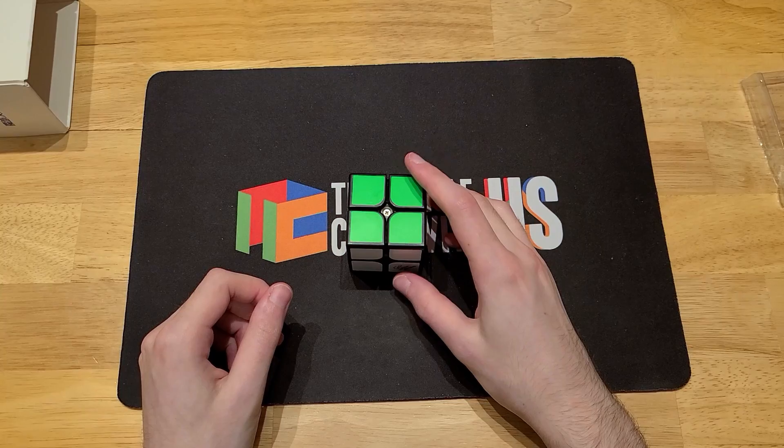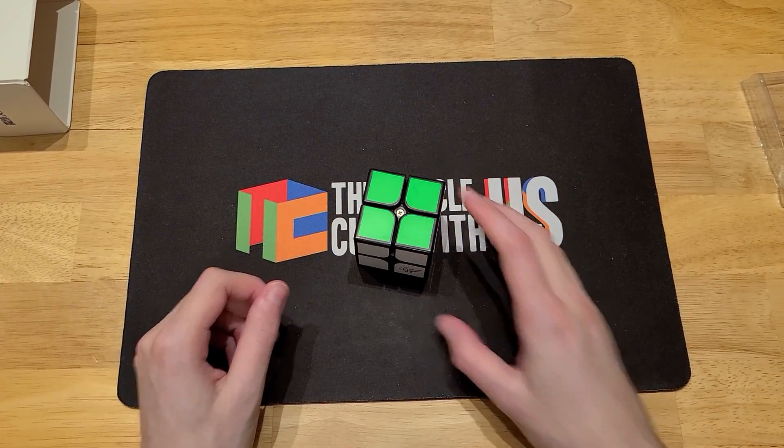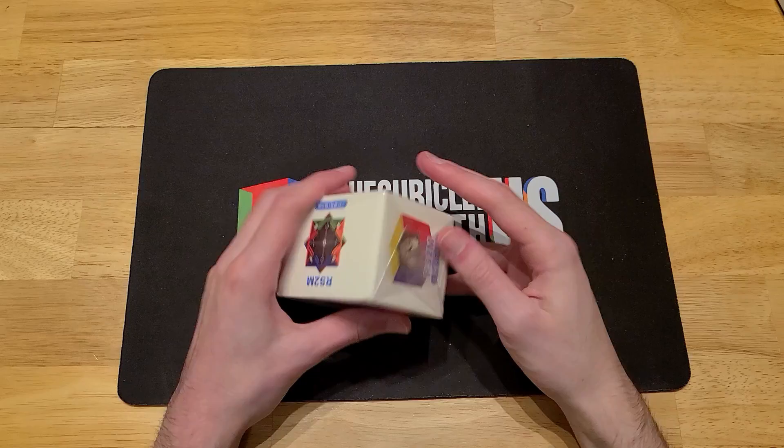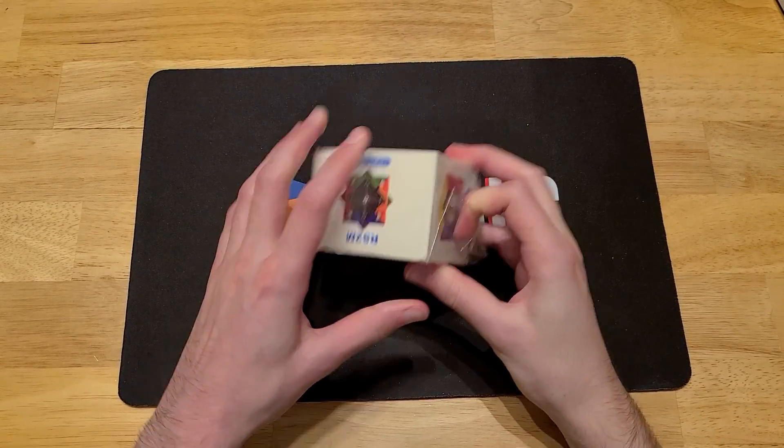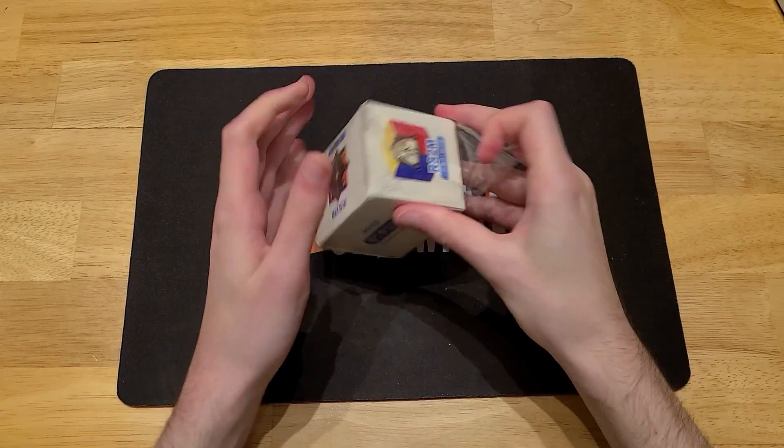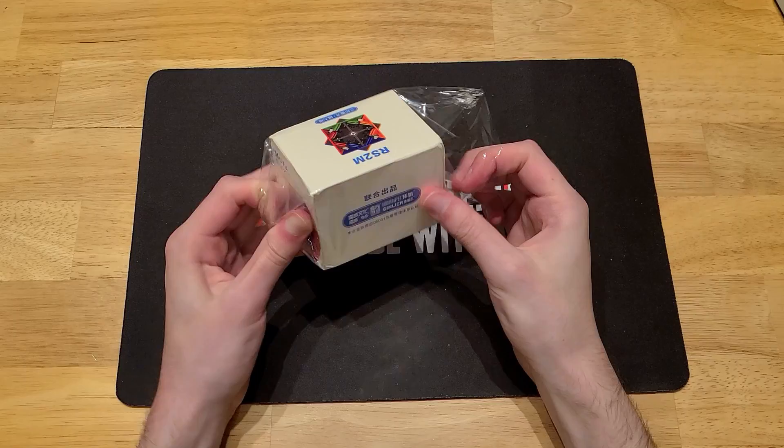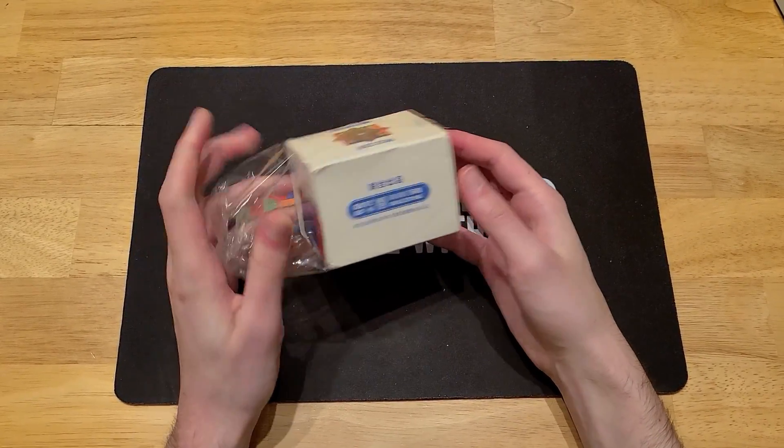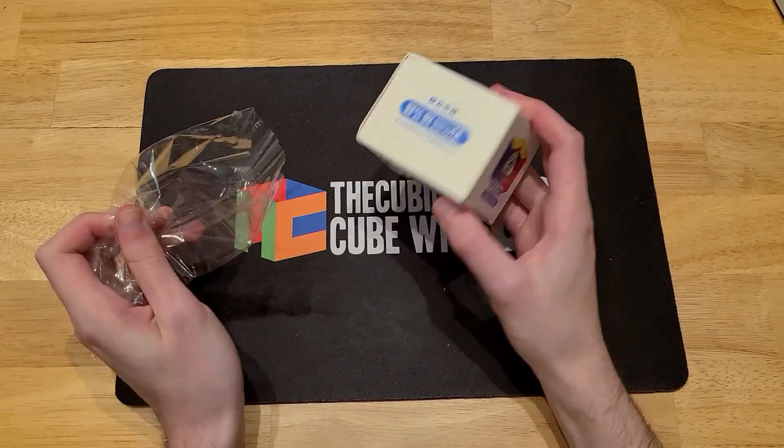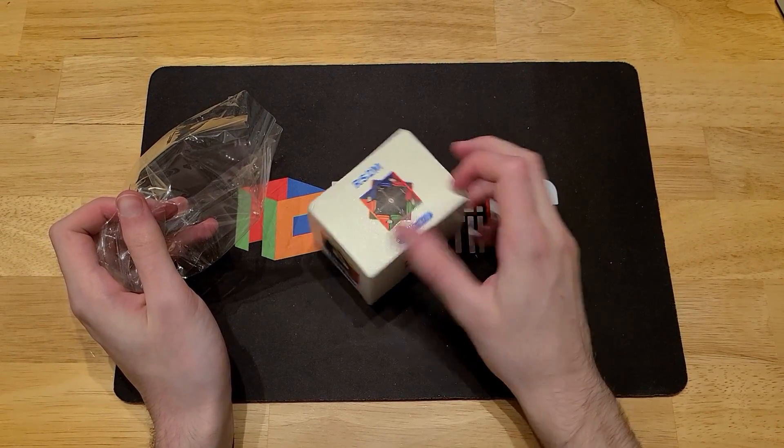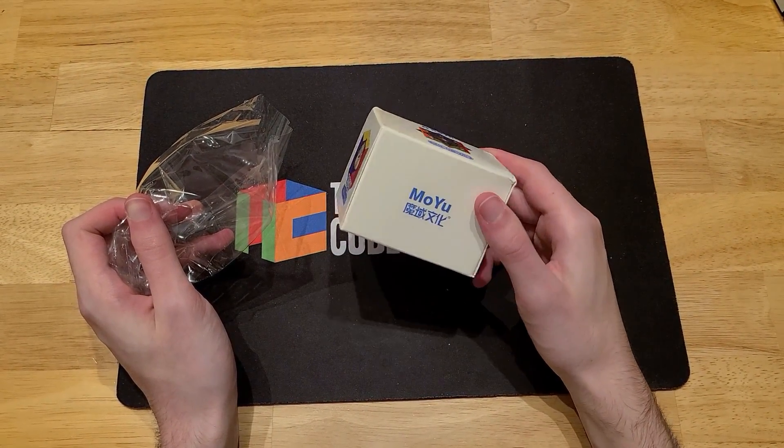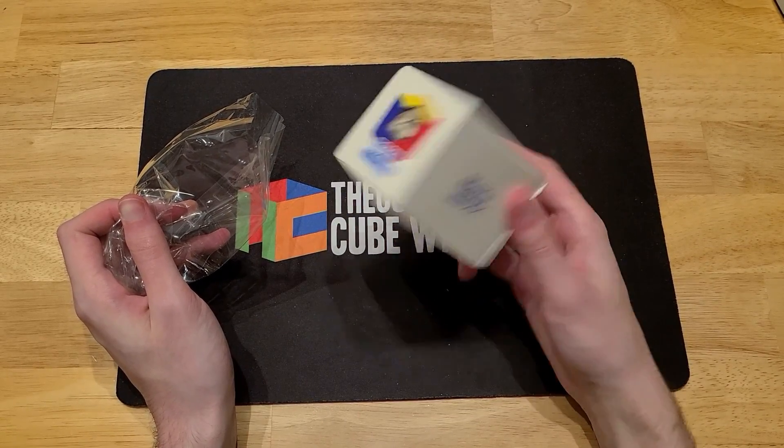But yeah, that's the Xinghen TSM. Pretty cool cube. Okay, next we have the RS2M. I believe this released shortly after the RS3M 2020, which is one of the best 3x3s in history in terms of value and performance even. It's a really good cube, so hopes are high for this puzzle. Not really sure how it compares, but we'll see.